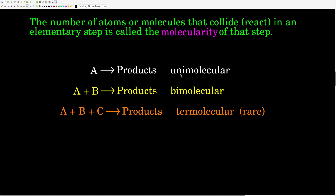Uni meaning one — the molecularity is one. If two things have to come together to form the products, that's a bimolecular step. If three things have to come together, that's what we call a termolecular step. That's a very rare occurrence, because for three molecules to all come together at the same time with enough energy and all three in the correct orientation is statistically going to be quite rare. Reactions that require this are not common, but it does happen.